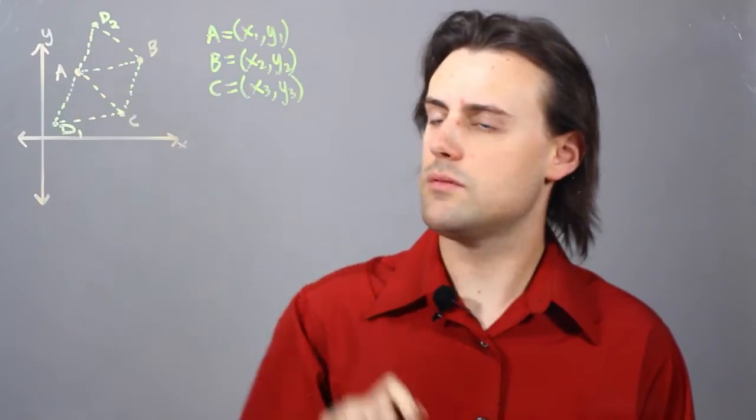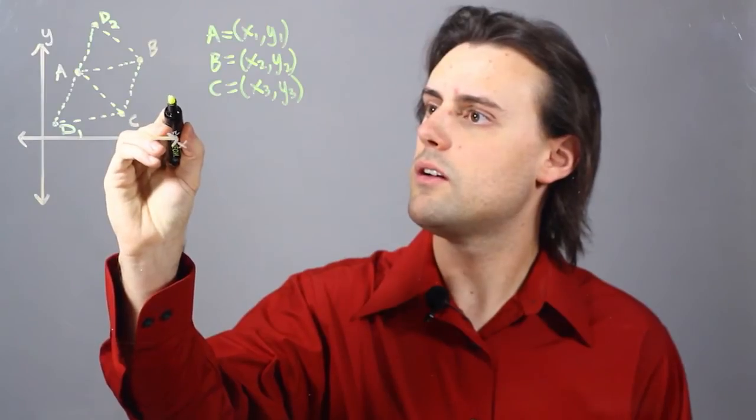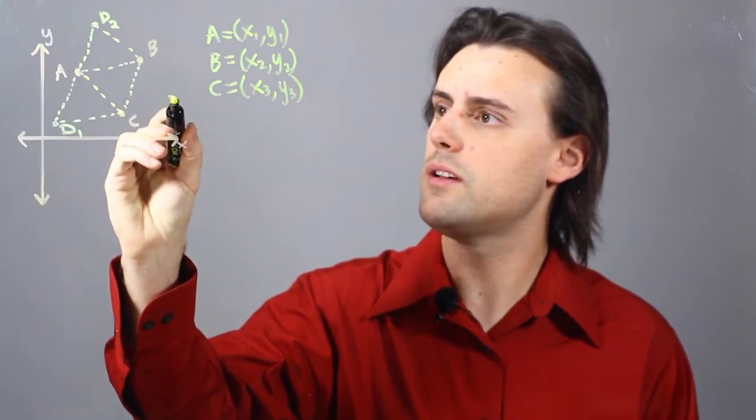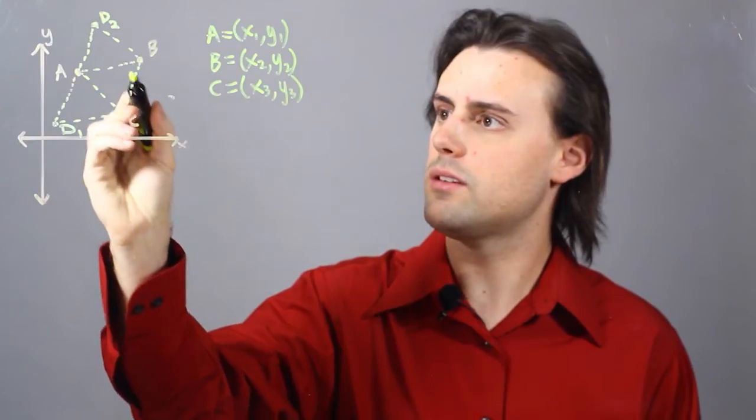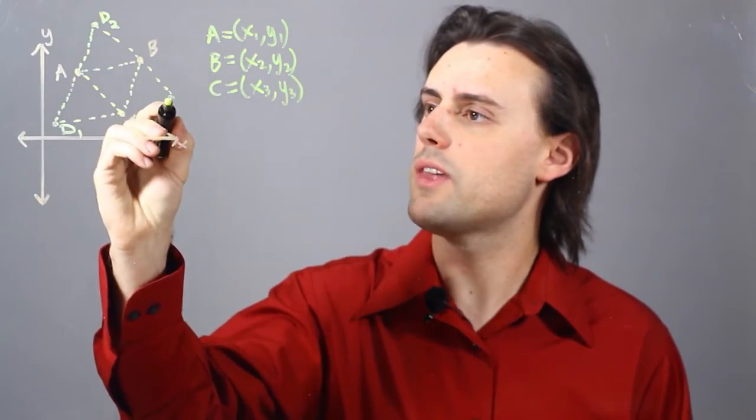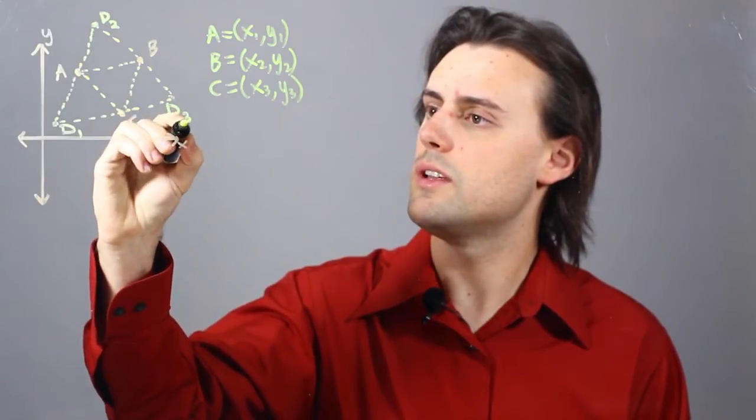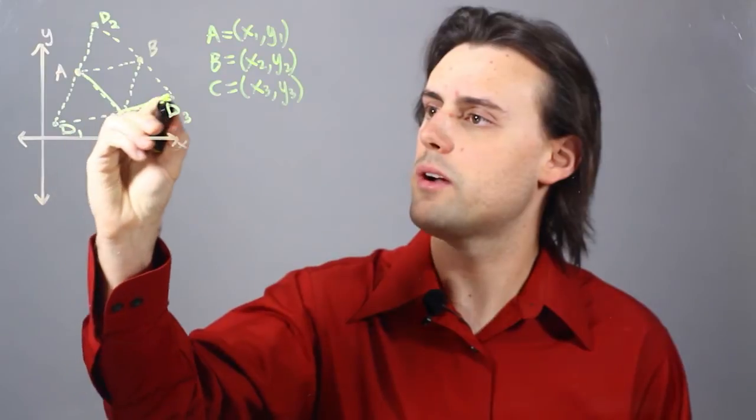Finally, our third parallelogram will be over here, where I have my fourth point to the right of the line BC. So if I make that connection there, I can see for D3 a third parallelogram.